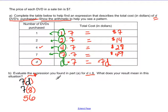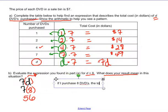And be sure to answer the last part of the question. What does your result mean? Well, let's think about this. What does our result mean? Remember, d was the number of DVDs. So what this means is, if I purchase 8 DVDs, the total cost will be $56. Okay, so we're bringing in all the information that they gave us to answer the question clearly. So here would be our final answer.